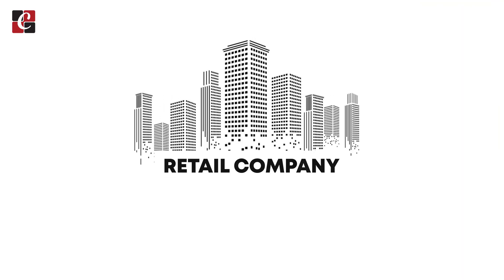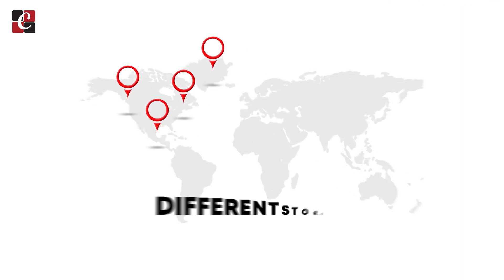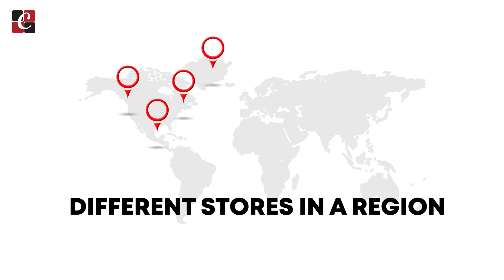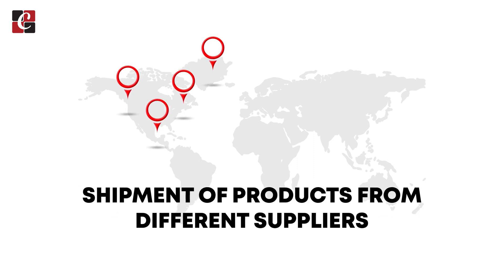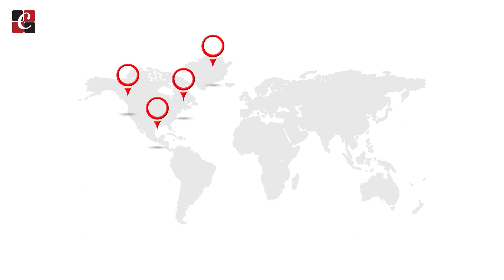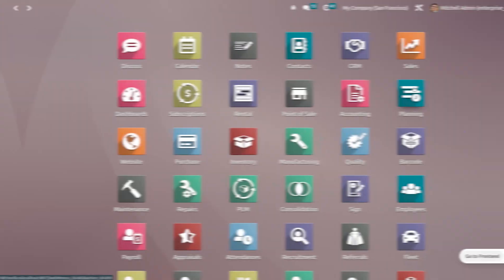Imagine a large retail company that owns different stores in a region. These stores might be receiving shipments from different suppliers, and the products won't be stored at a particular central warehouse. Instead, the company uses a cross-docking strategy to distribute their products. Let's see how we can manage cross-docking in Odoo 16.